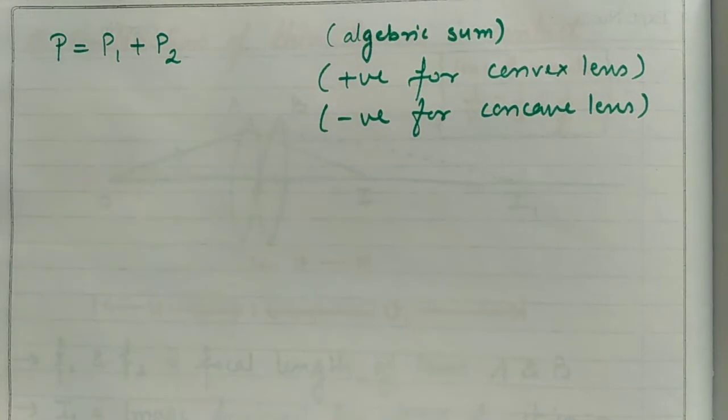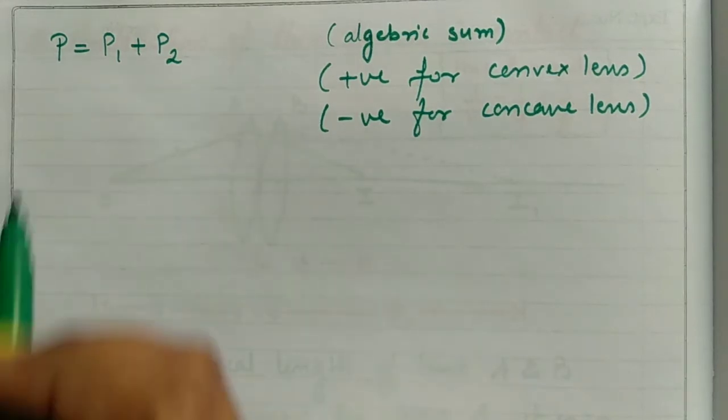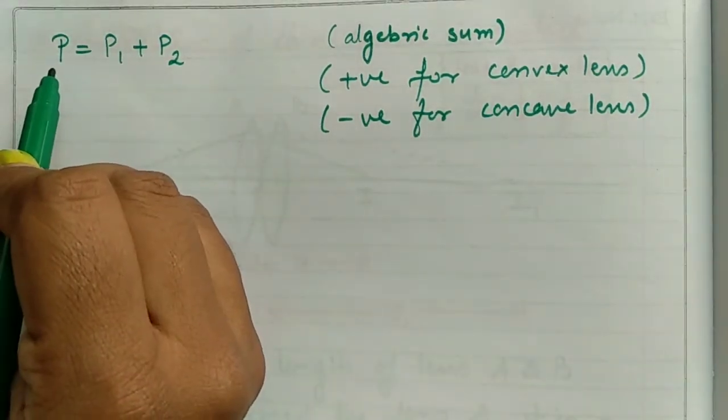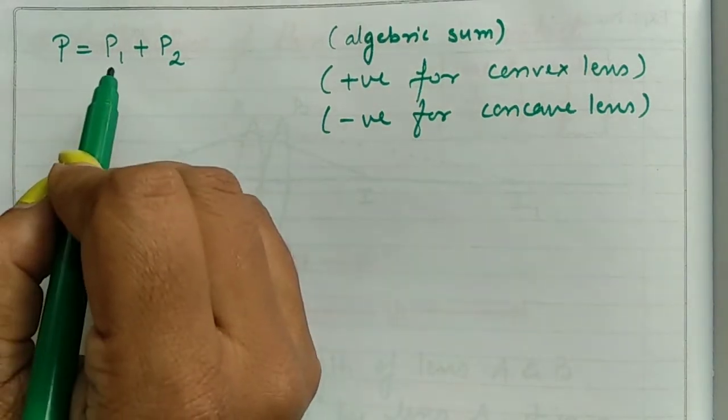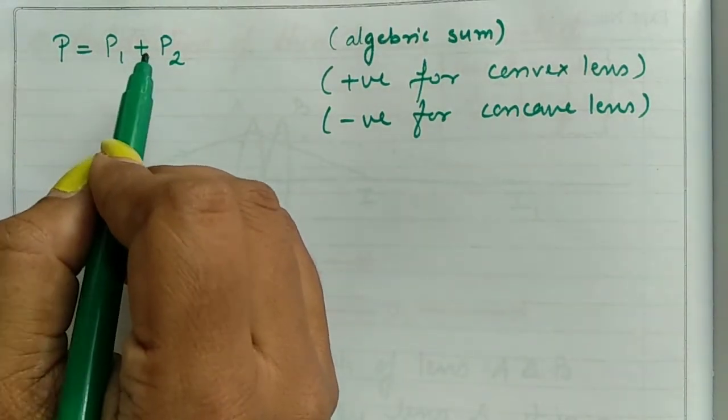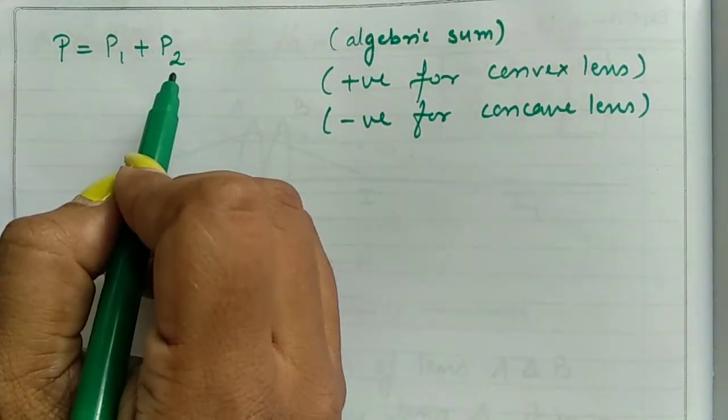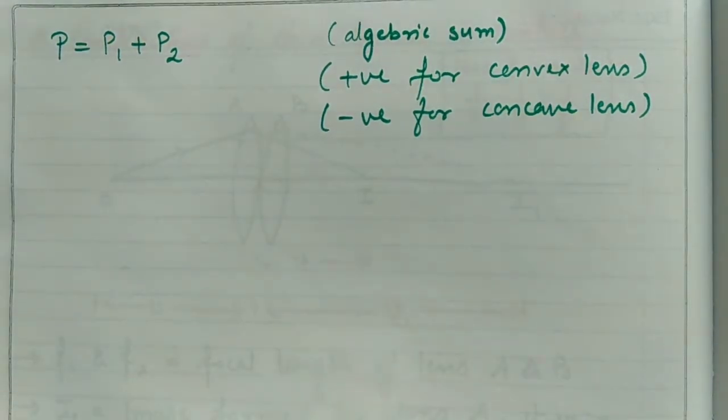Now if I want power of this system, then I know 1 upon F equals P. The total power equals 1 upon F1, which is P1, plus 1 upon F2, which is P2. If I had N number of lenses, then the resultant focal length formula would be 1 upon F equals 1 upon F1 plus 1 upon F2 plus 1 upon F3 and so on.